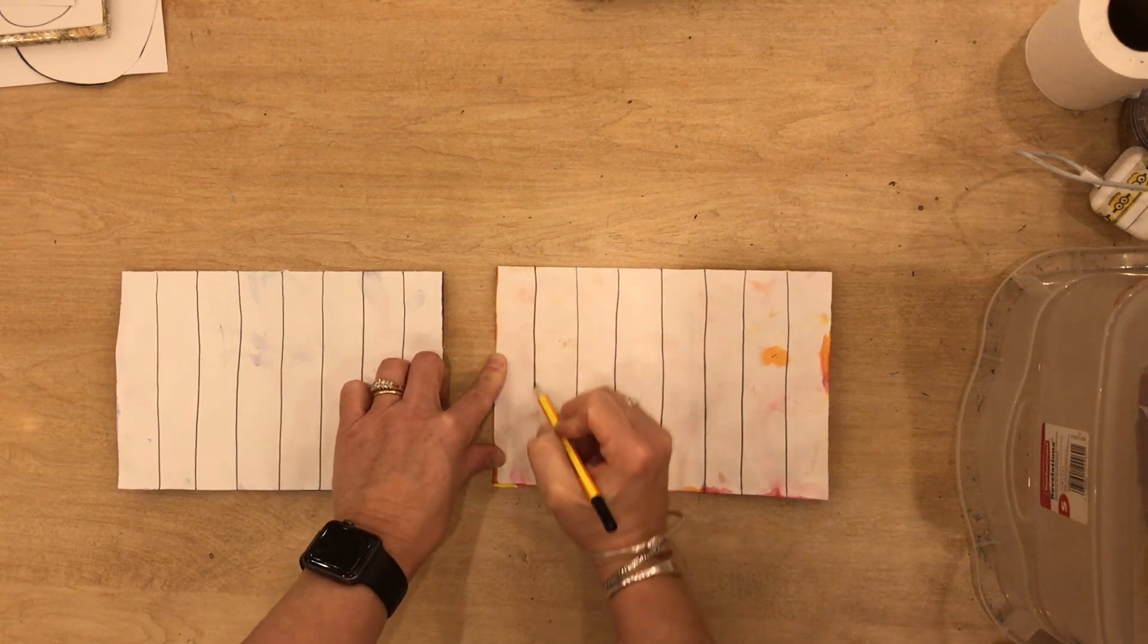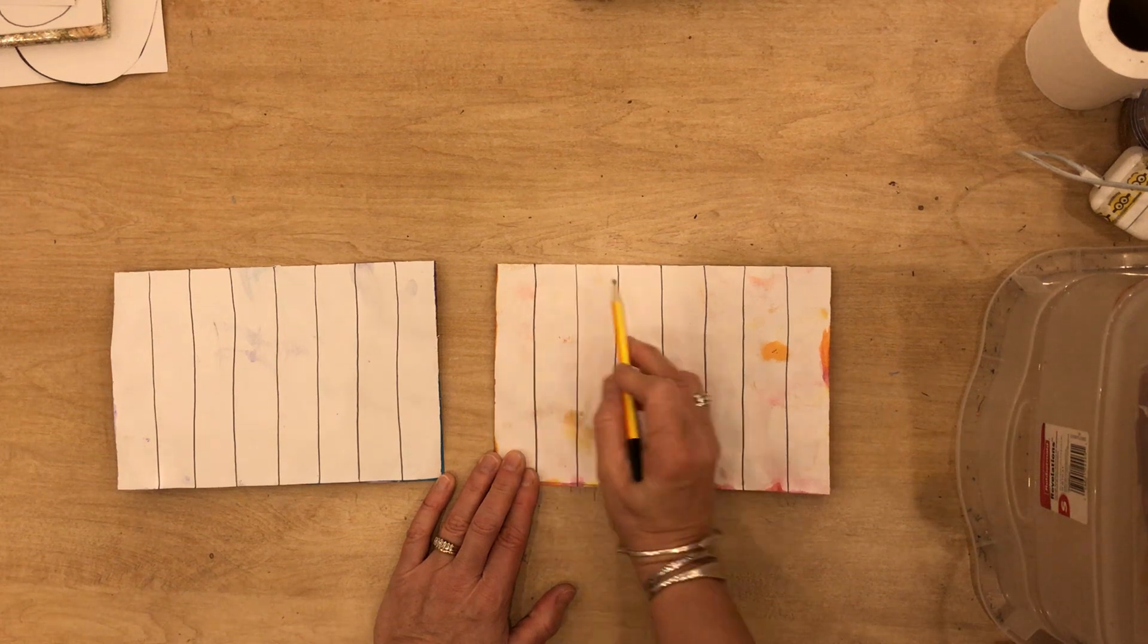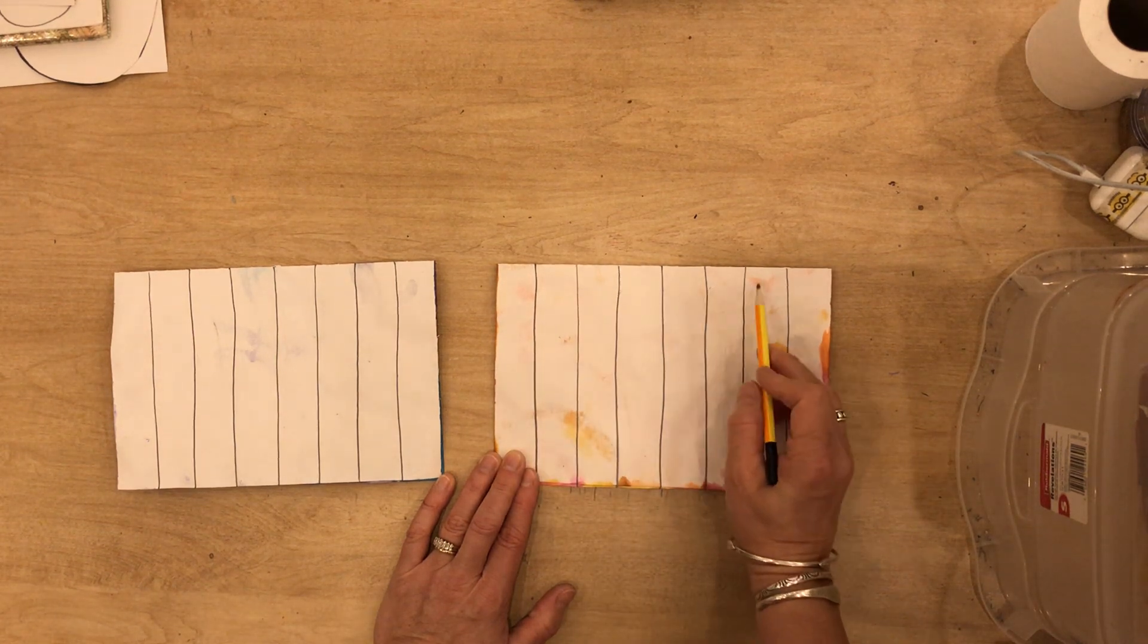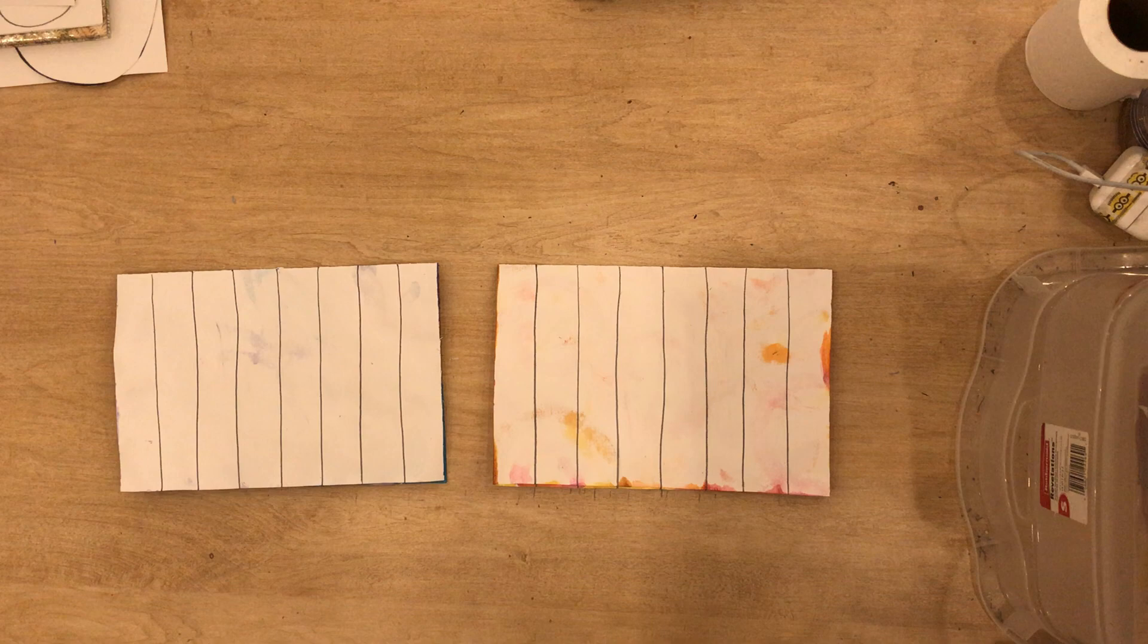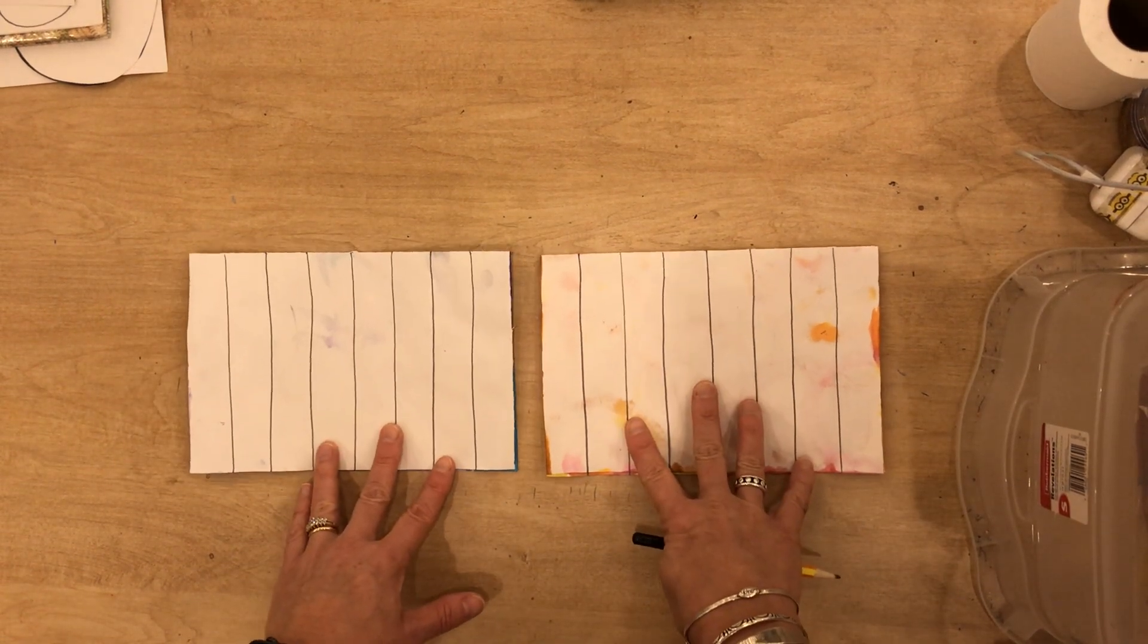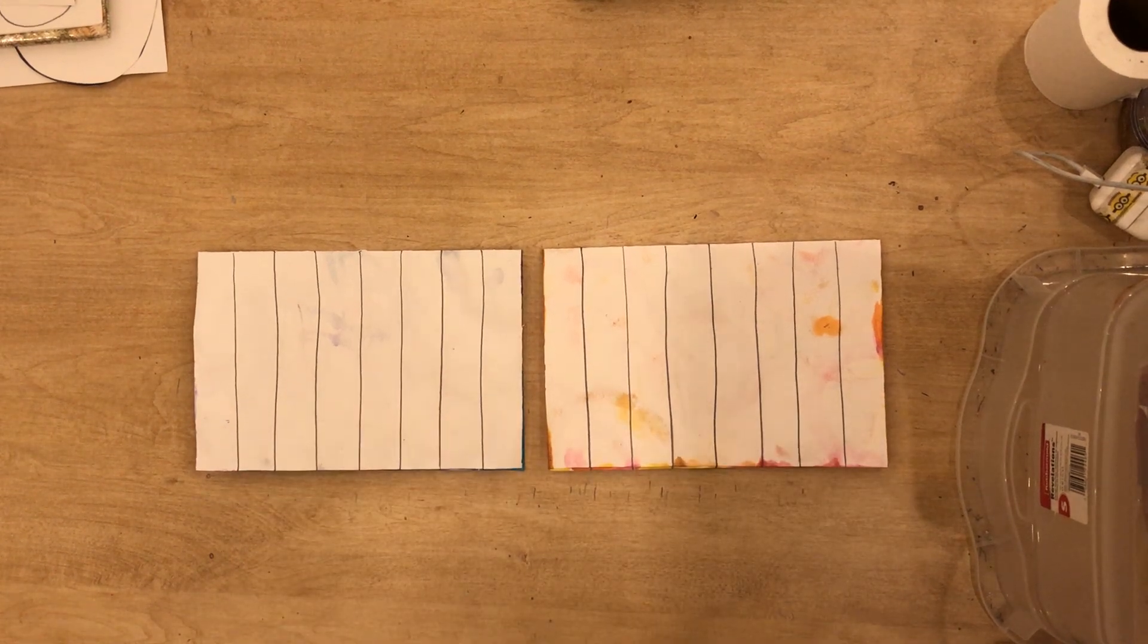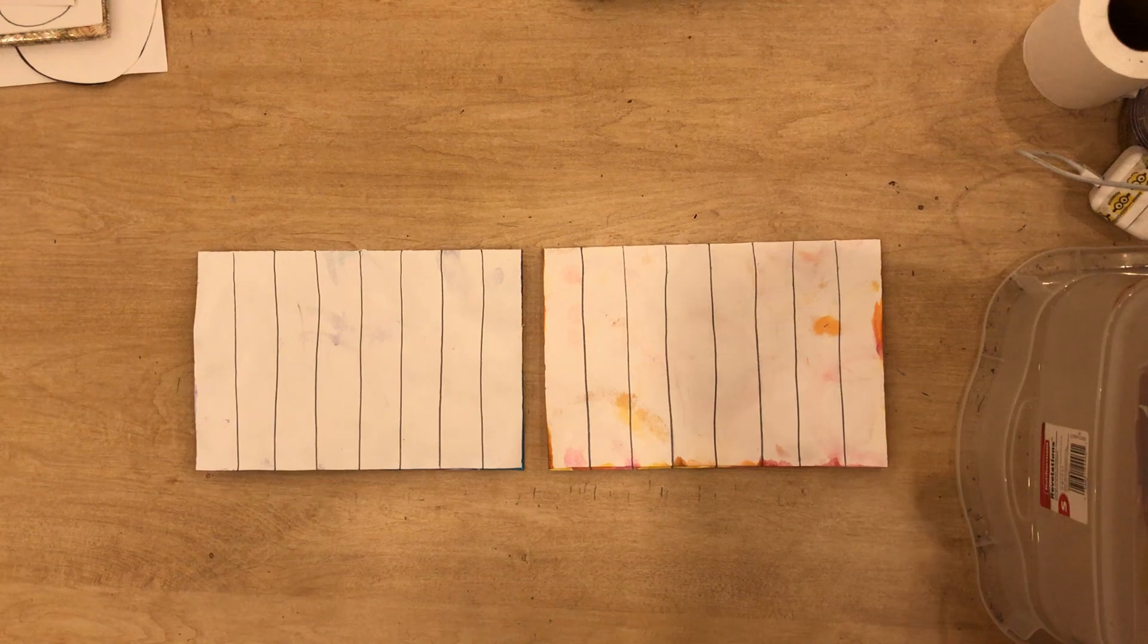So let's count the lines. How many lines should we actually have? One, two, three, four, five, six, seven. So this is what you should have on both your papers. When you get to this point, stop. We'll make sure everybody is ready to go on to the next step.